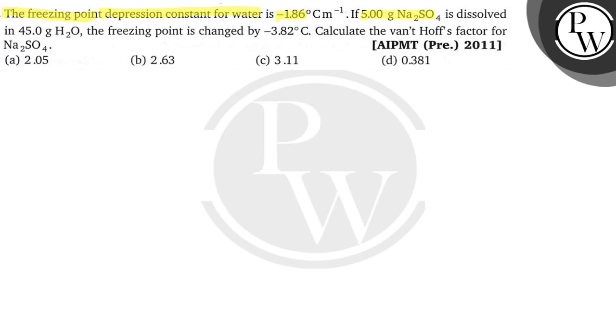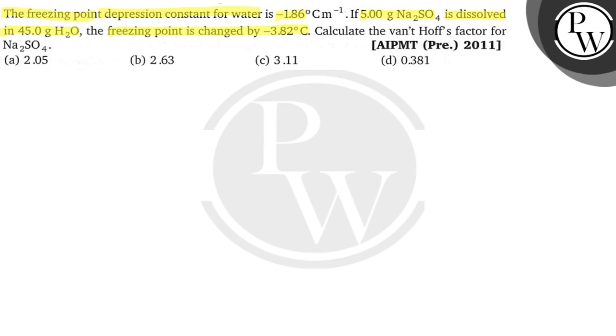If 5 grams of Na2SO4 is dissolved in 45 grams of H2O, the freezing point is changed by minus 3.82 degree Celsius. Calculate the Van't Hoff factor for Na2SO4.